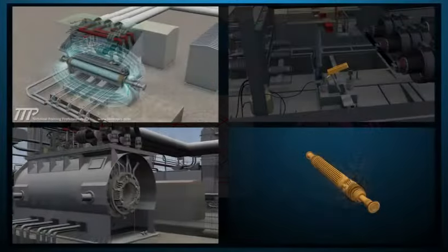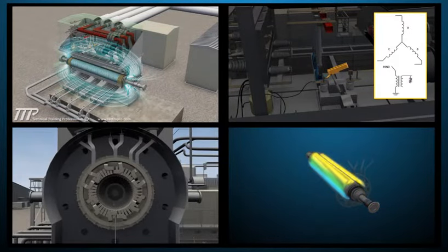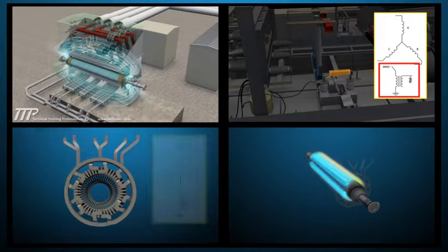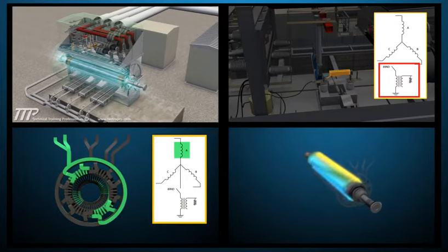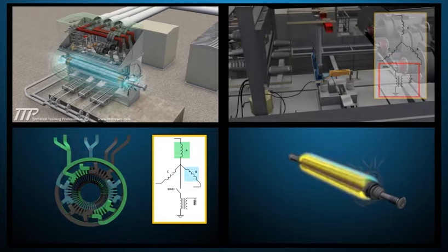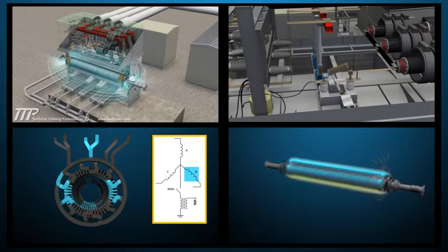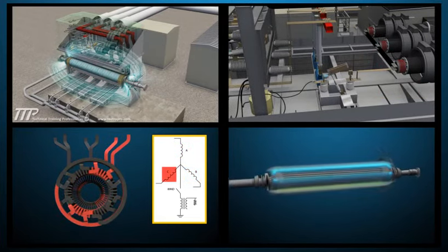For many, electrical topics are some of the most difficult concepts to understand. The generator course explains power generation, reactive power, and operation of the load commutating inverter, which is the means for starting a 7FA combustion turbine.